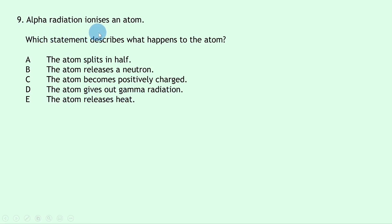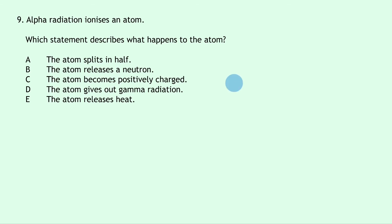Question 9 says alpha radiation ionises an atom and asks what happens. Ionisation involves an atom losing or gaining an electron to become a positive or negative ion. If an atom loses an electron through ionisation it becomes positively charged, becoming a positive ion. So the answer is C: the atom becomes positively charged.